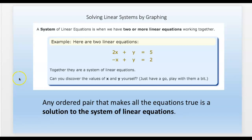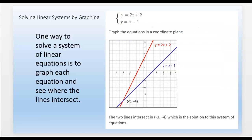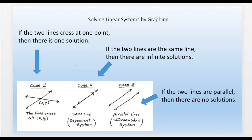But guess and check can take a long time. Another way is to graph both lines and see where the two lines intersect. That intersection point is the (x, y) coordinate they have in common — the one that satisfies both equations and makes both equations true. Where they intersect, that's the solution to the system.